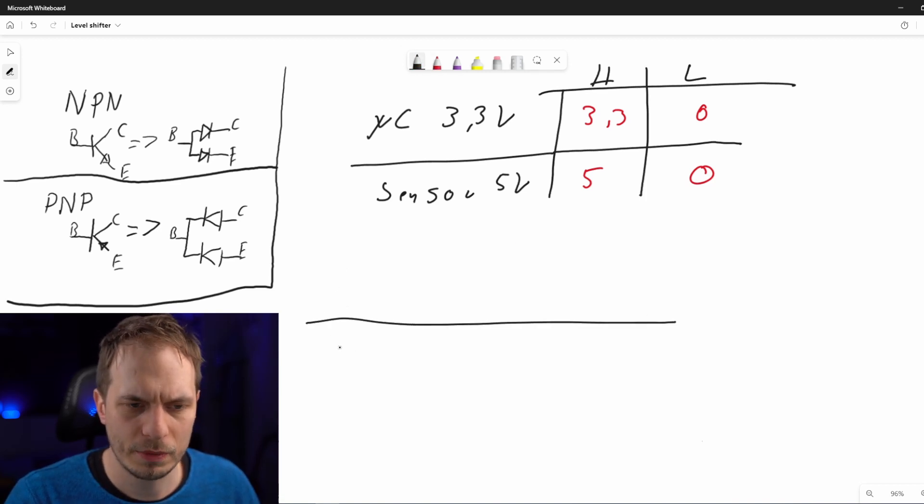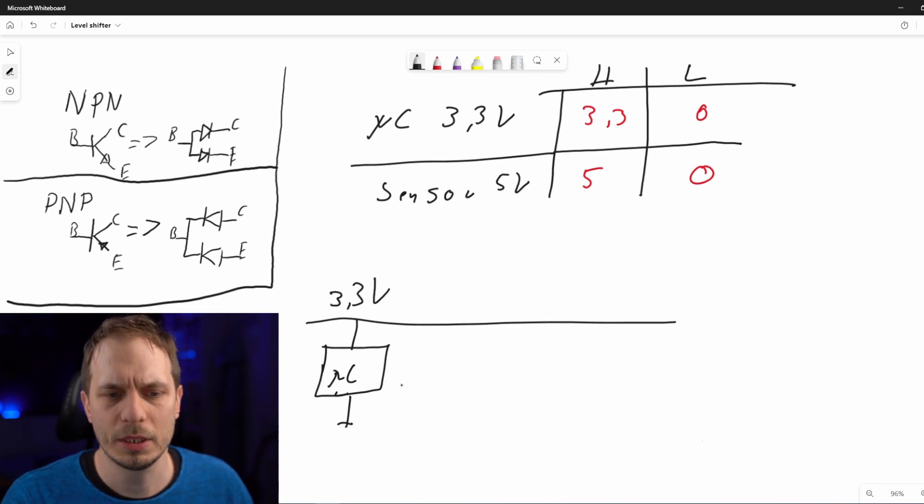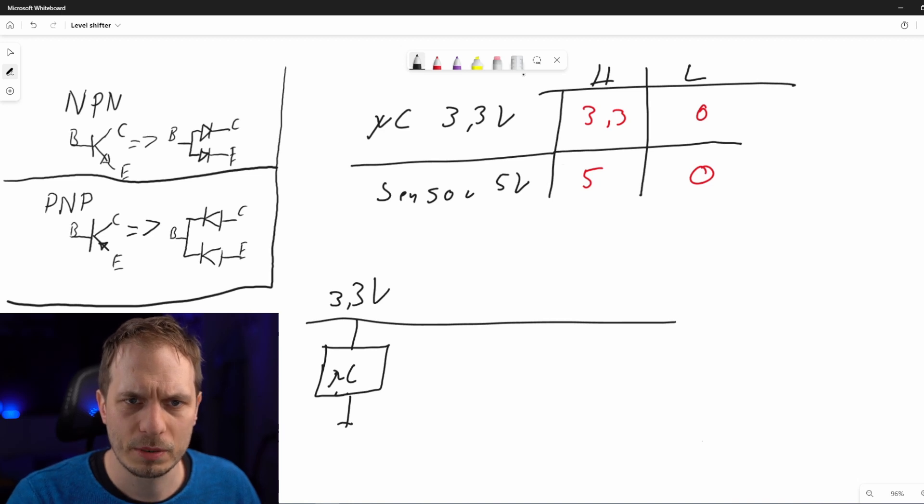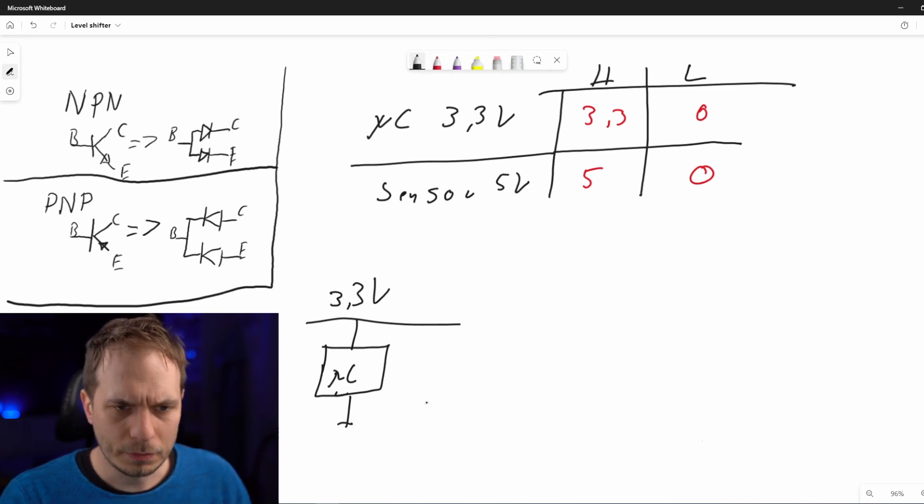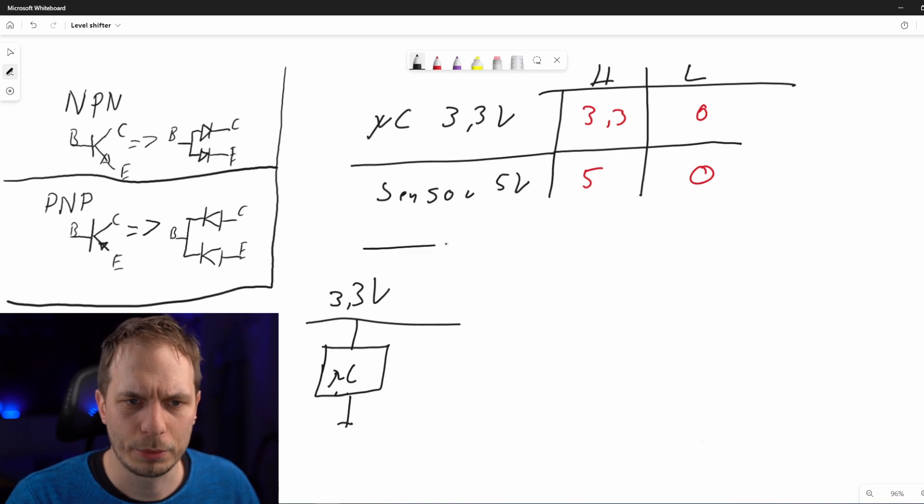The first thing we have is our microcontroller and that one is powered with 3.3 volts, so we just connect it to 3.3 volts. Then we have our other rail with 5 volts.